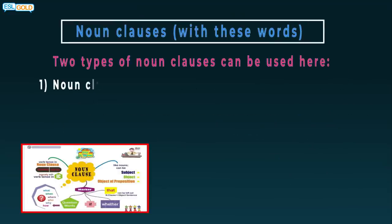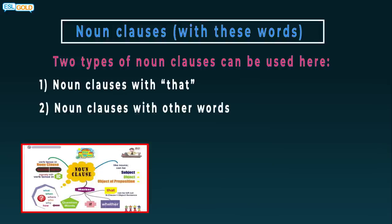Noun clauses with these words. Two types of noun clauses can be used here: noun clauses with that, or noun clauses with other words. For example, he said that he would love her forever. She told him what he should do.